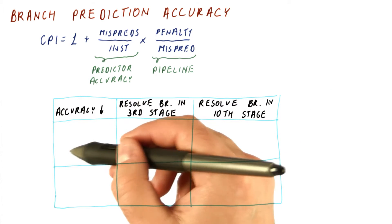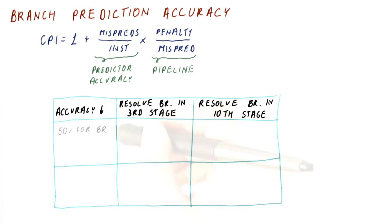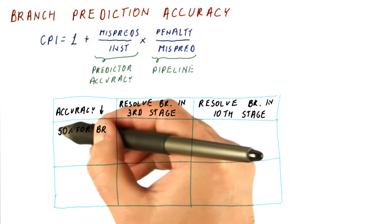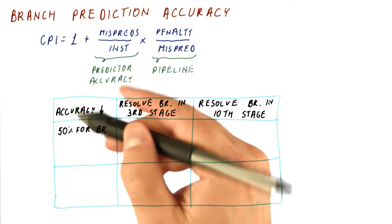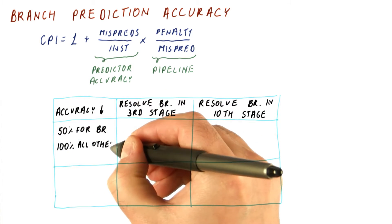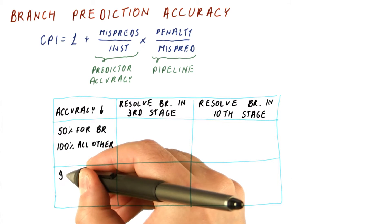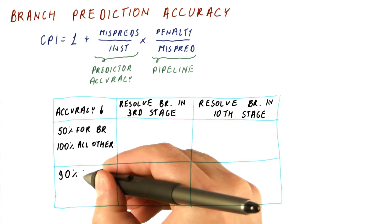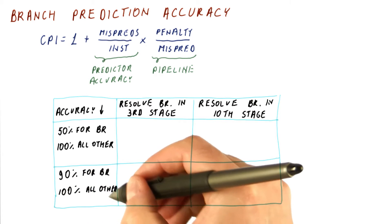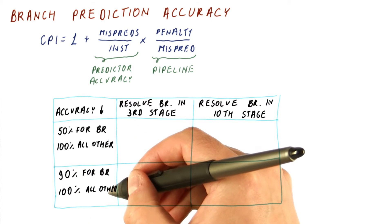Let's also look at different accuracies for predictors. We will look at a predictor that is 50% accurate for branches and 100% accurate for all other instructions, and we will look at a predictor that is 90% accurate for branches and 100% accurate for all other instructions.